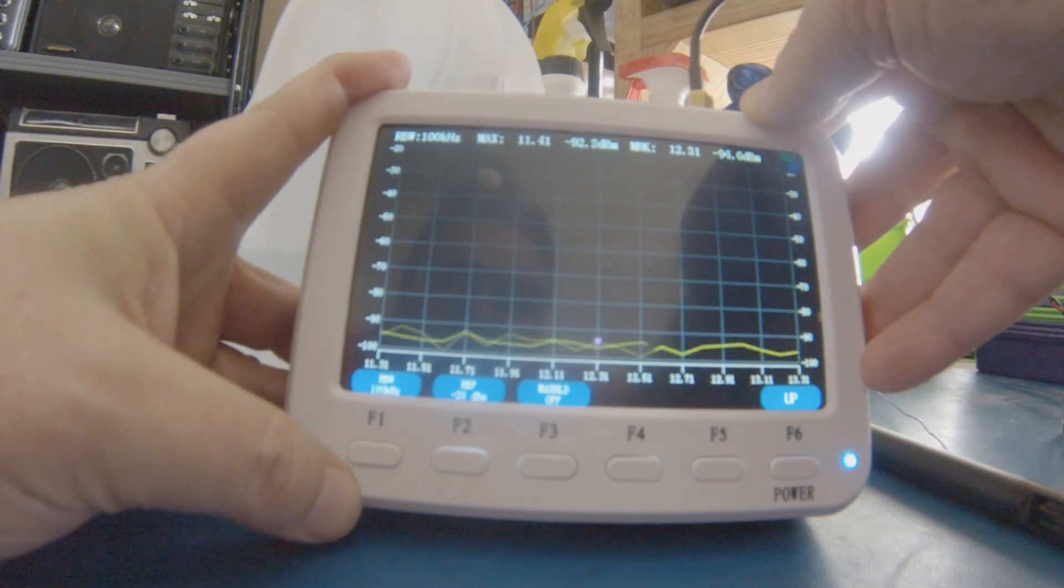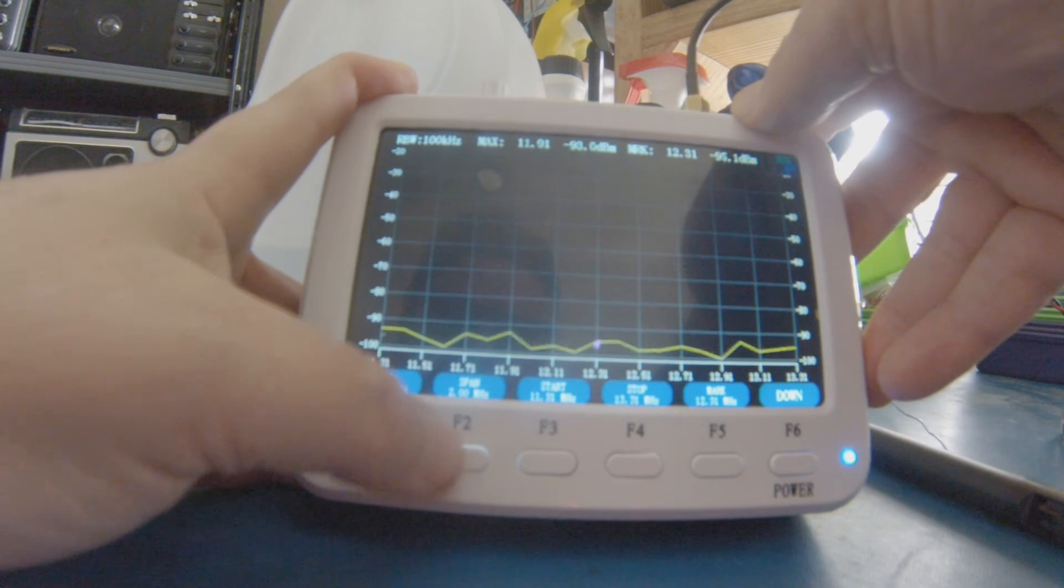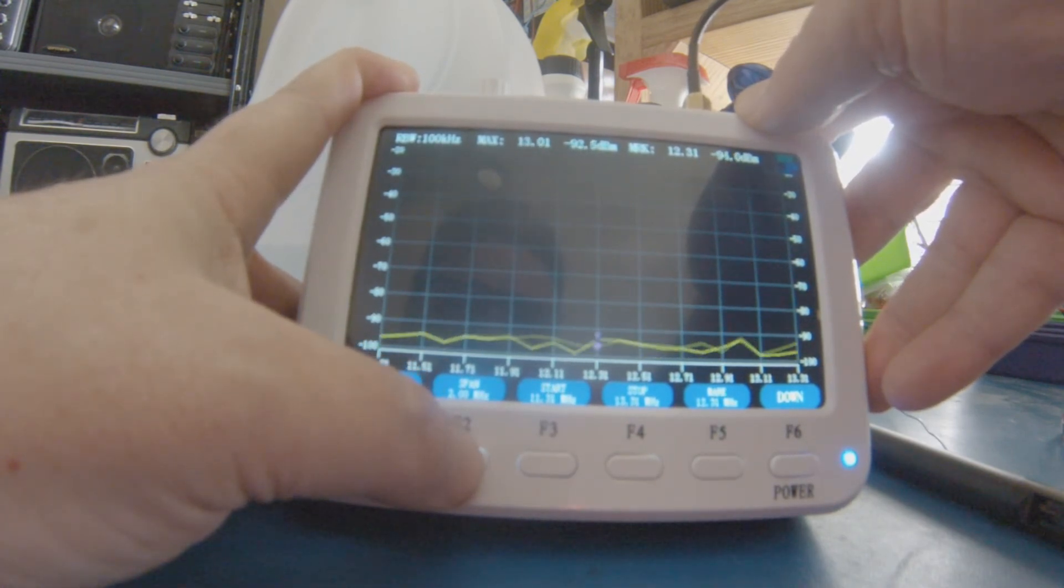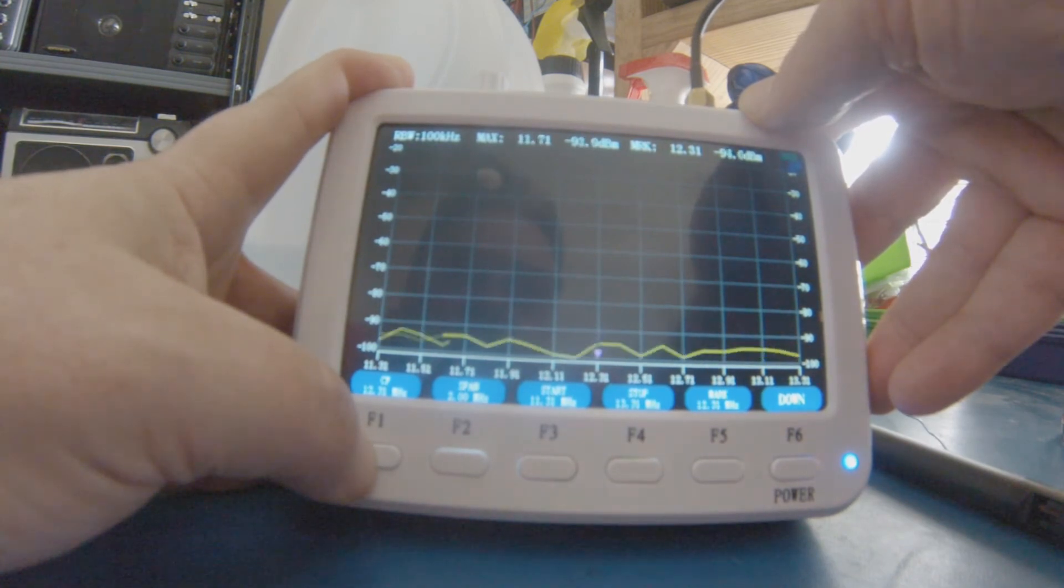Now I have to go back up. My span is now set to 2 megahertz and my center frequency to 12.5 megahertz. So I've got to do both of those if I want to get my peak back.